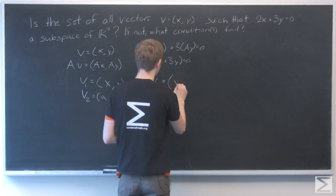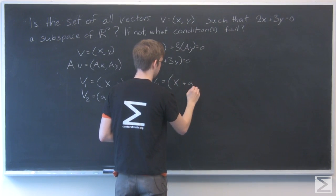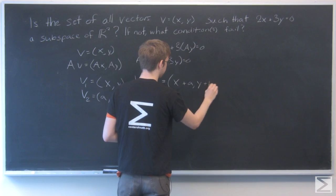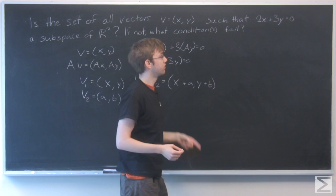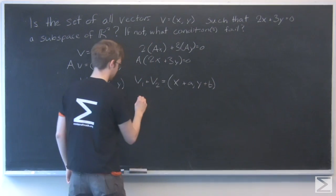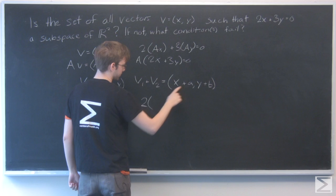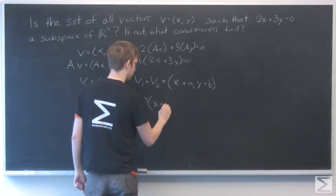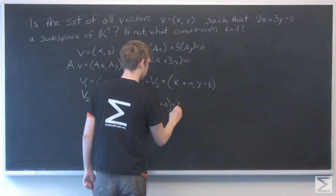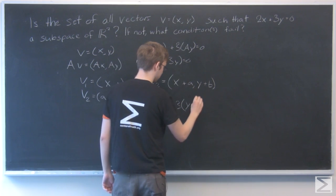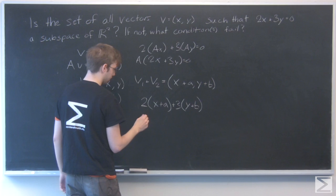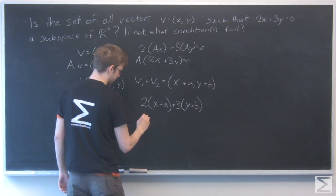Adding them together gives (x + a, y + b). Now I'll put these into that equation and see if it's still equal to 0. So 2(x + a) + 3(y + b).